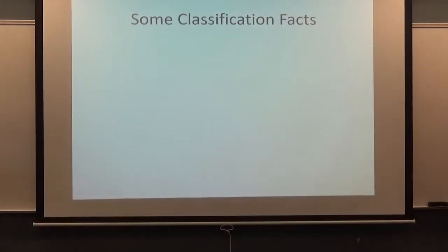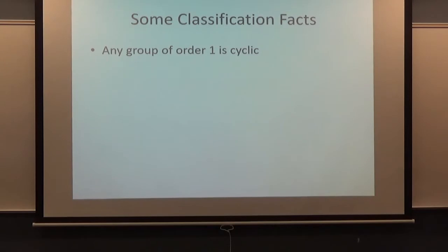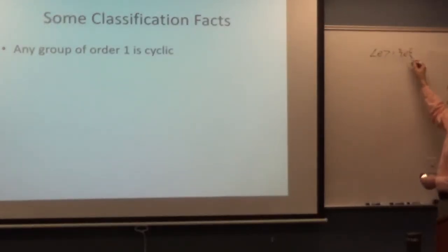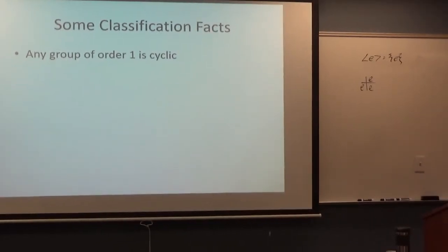Here are some classification facts. I've hinted at these already, and I could see at least a third of these being on the exam. The first two are probably too easy. Any group of order one is cyclic — you have one element, which must be the identity, and every element is a power of the identity. The trivial subgroup of any group is cyclic.